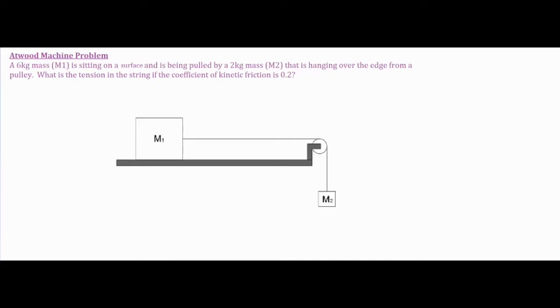In this video we're going to be working on an Atwood machine problem. We have a six kilogram mass M1 that's sitting on the surface of a table and is being pulled by M2, a two kilogram mass hanging over the edge of a table. It asks what is the tension of the string if the coefficient of kinetic friction is 0.2.